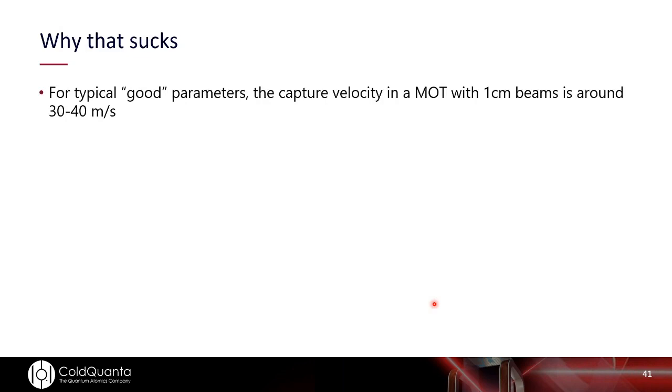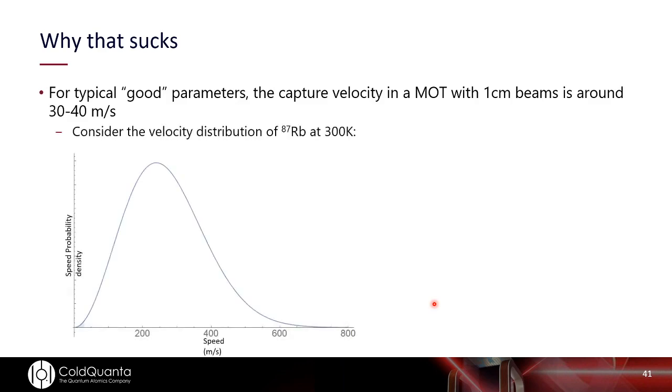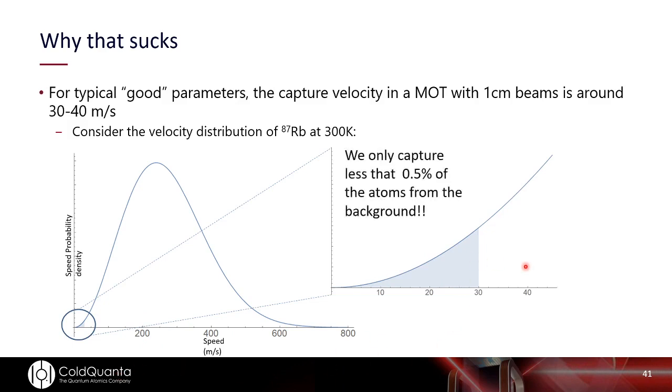So I can only capture up to a certain velocity of atoms, and that actually ends up being very strongly dependent on things like detuning, and particularly beam size. So for typical good parameters where I might have a mod with a one centimeter beam, I'm going to be limited in the case of rubidium to only being able to trap the atoms that are moving about 30 to 40 meters per second, which sounds kind of fast. But if you think about what's the velocity of the distribution of rubidium at room temperature, well, you'll notice my scale down here is in hundreds of meters per second. So if I zoom in here on the 30 meter per second tail, I'm looking at only like less than half a percent of the total number of atoms available. And so everything else that's in the system is just kind of garbage that interferes with our trap.